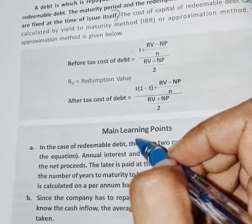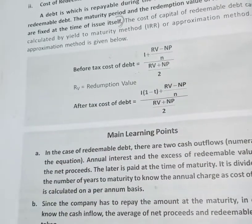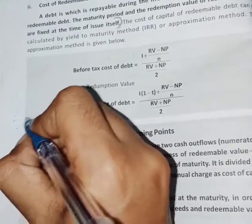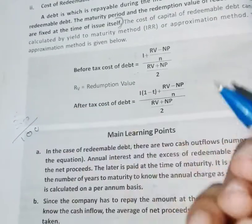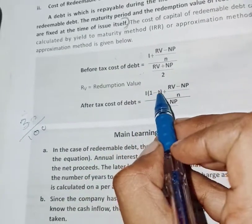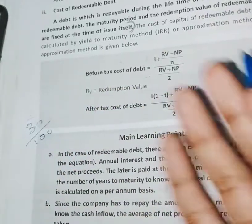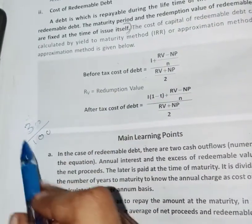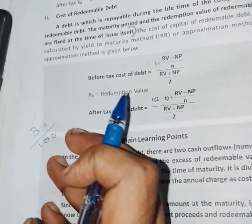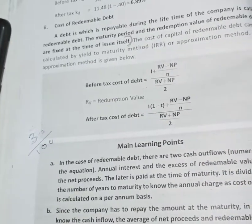T is the tax rate. To calculate T, we divide the given tax percentage by 100. For example, if the tax rate is 30%, then T equals 0.30. The tax rate could be 30, 20, 25, etc. — we convert the percentage accordingly.